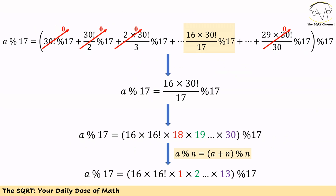Now let's simplify further. Because 30 factorial has 17 as a factor, 30 factorial mod 17 is 0. The same happens for 30 factorial over 2, and for 2 times 30 factorial over 3 — in fact this happens for every term except 16 times 30 factorial over 17. Therefore a mod 17 equals 16 times 30 factorial over 17, mod 17.